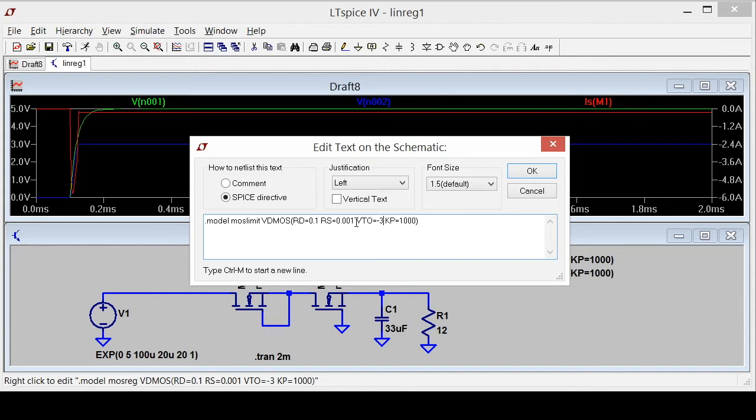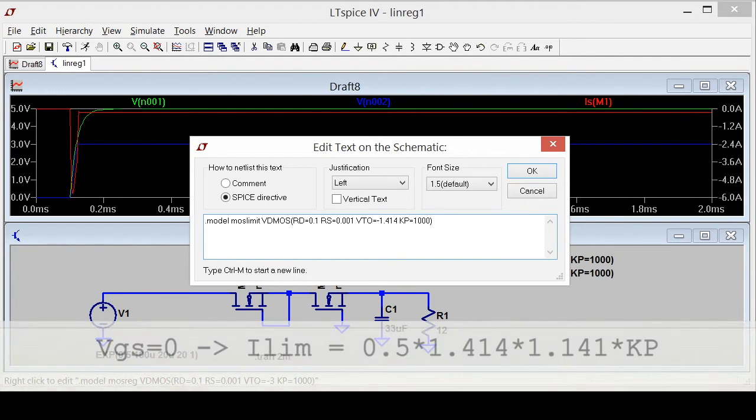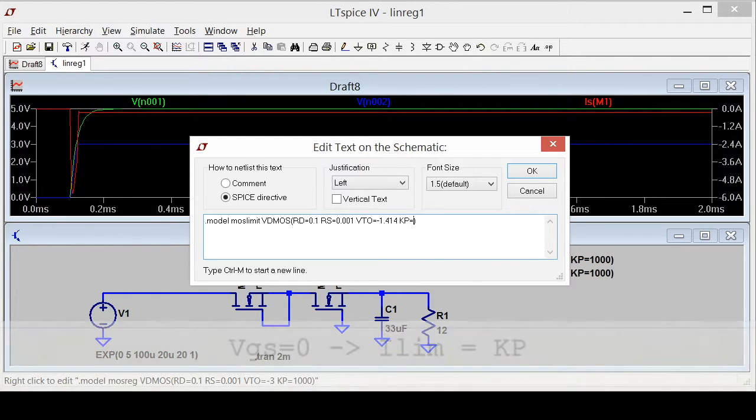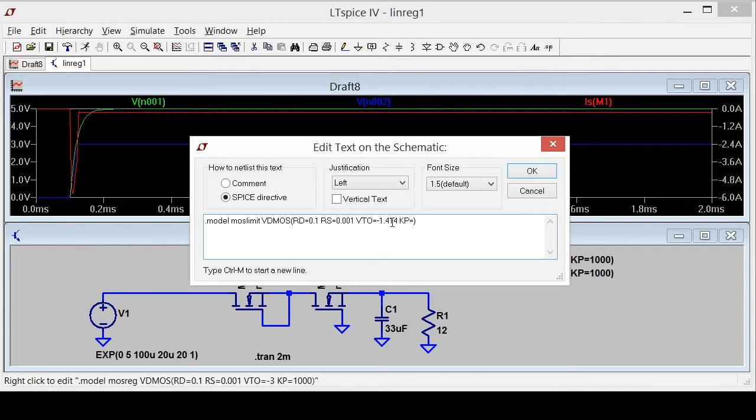The maximum current that can flow through this FET when the gate to source voltage is 0 volts, which is what I have because I wired them together, is 1 half times VTO squared times KP. Since I have that factor of 1 half, if I make VTO minus 1.414, then KP is my current limit, because it's 1 half times this number squared is 2, so that's 1.